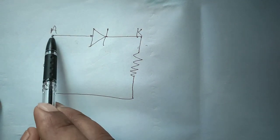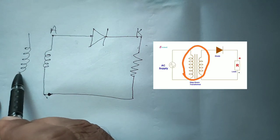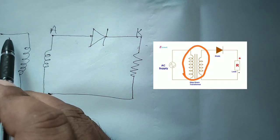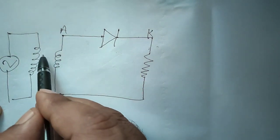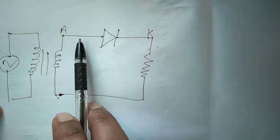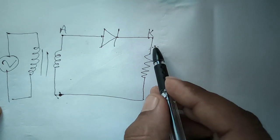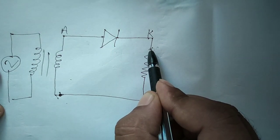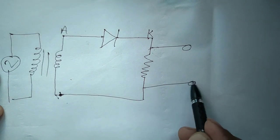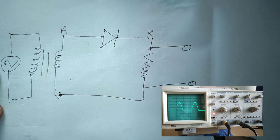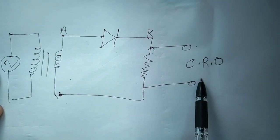We connect one end of the secondary coil to the diode anode and the other end to the resistor, with the primary coil connected to 240V AC. In the circuit diagram, the diode and resistor are connected, along with the transformer. This resistor is what we call the load. We will now observe the rectifier output waveform on the CRO.